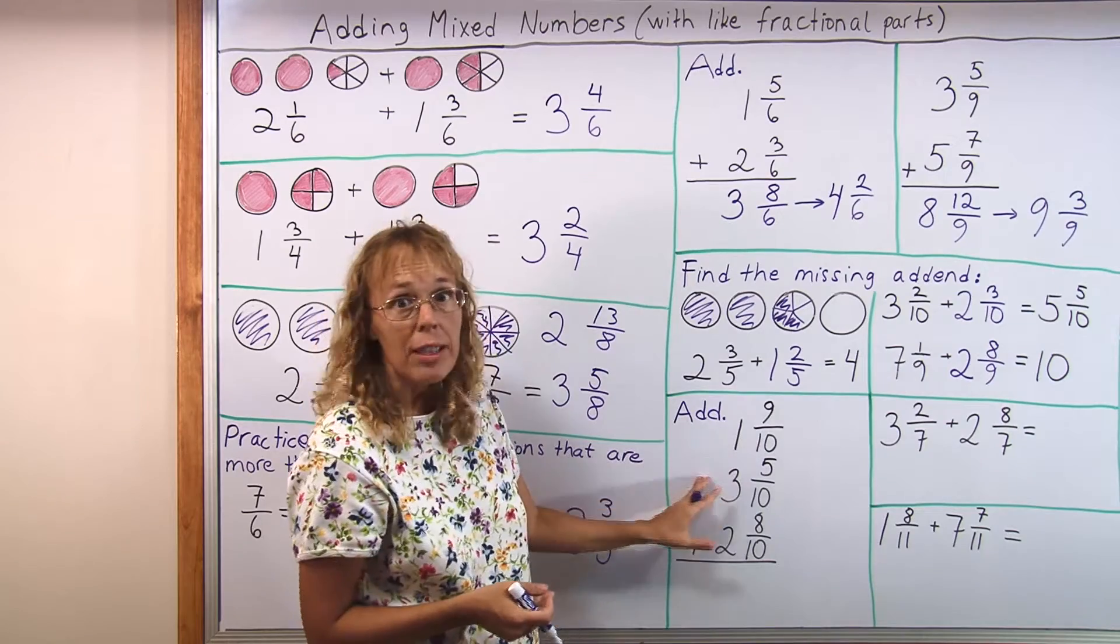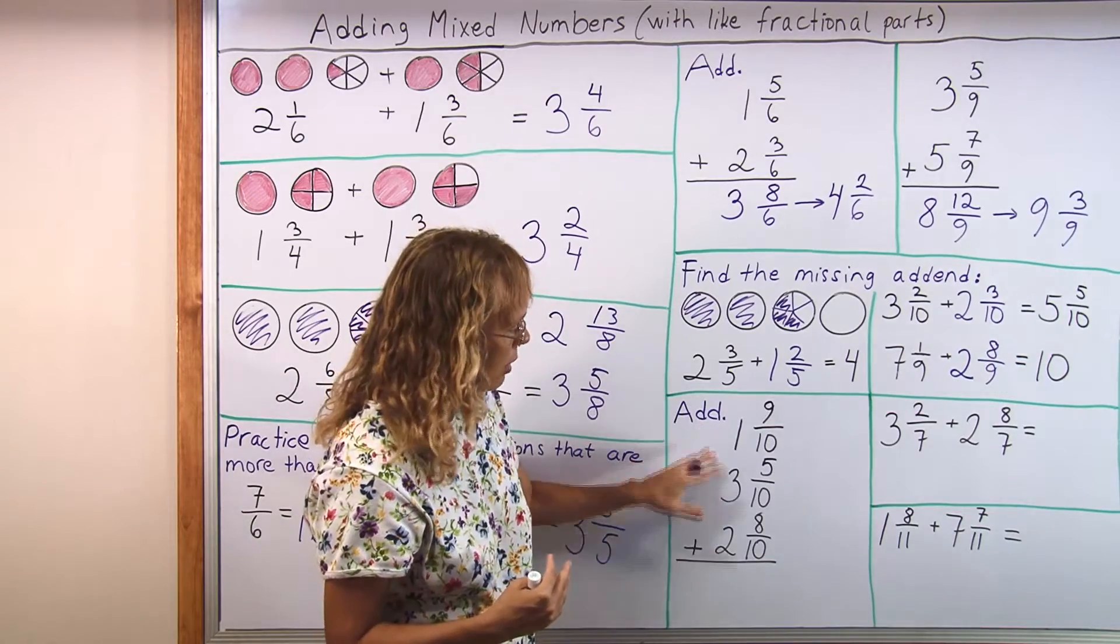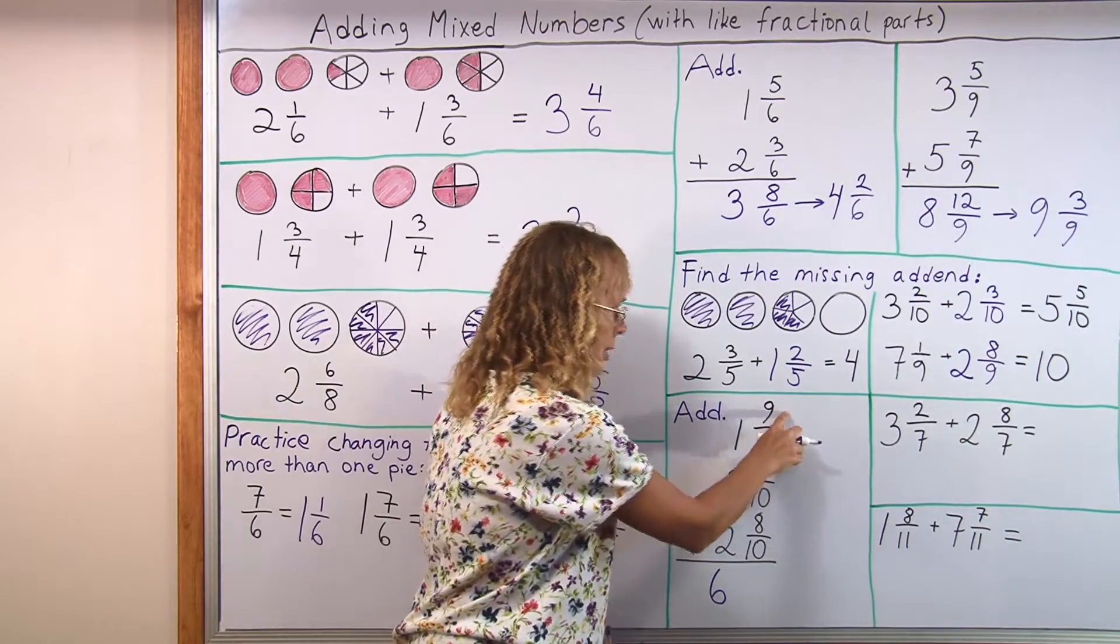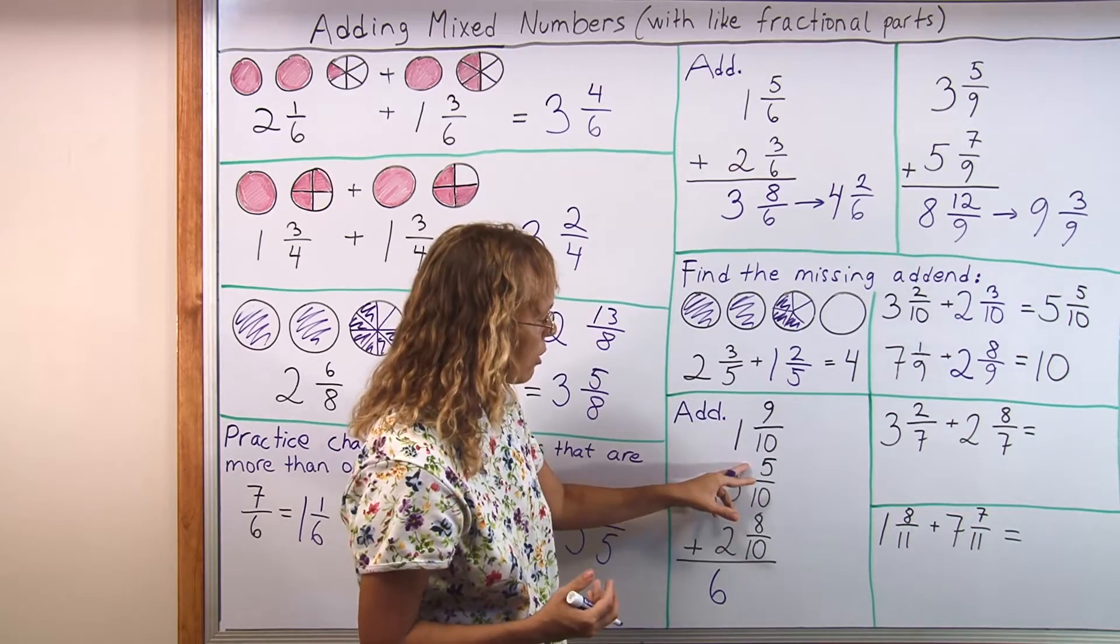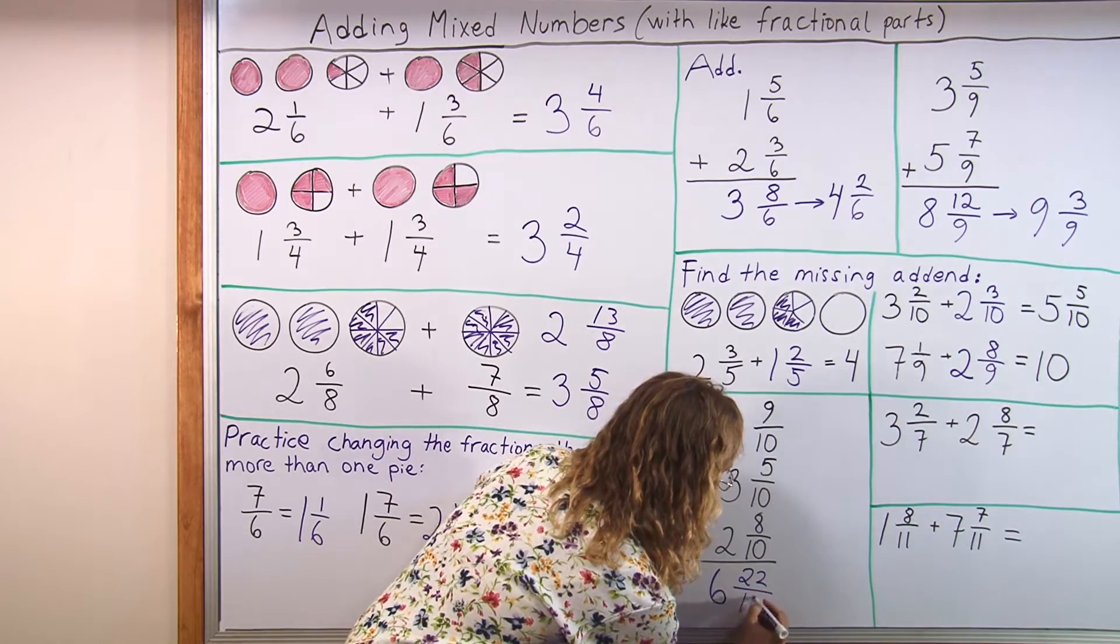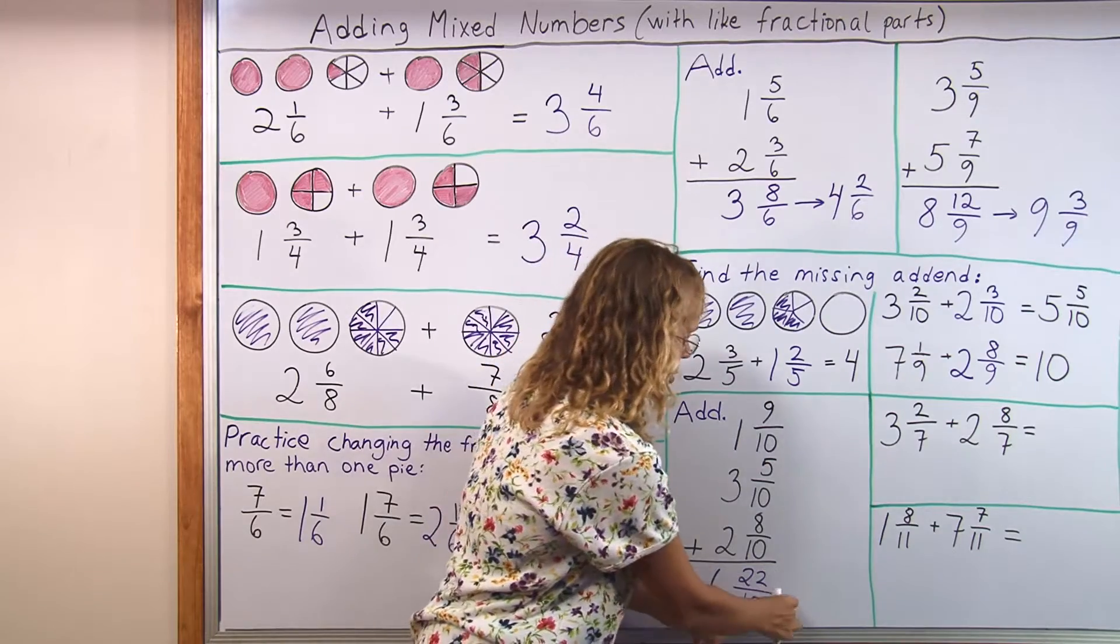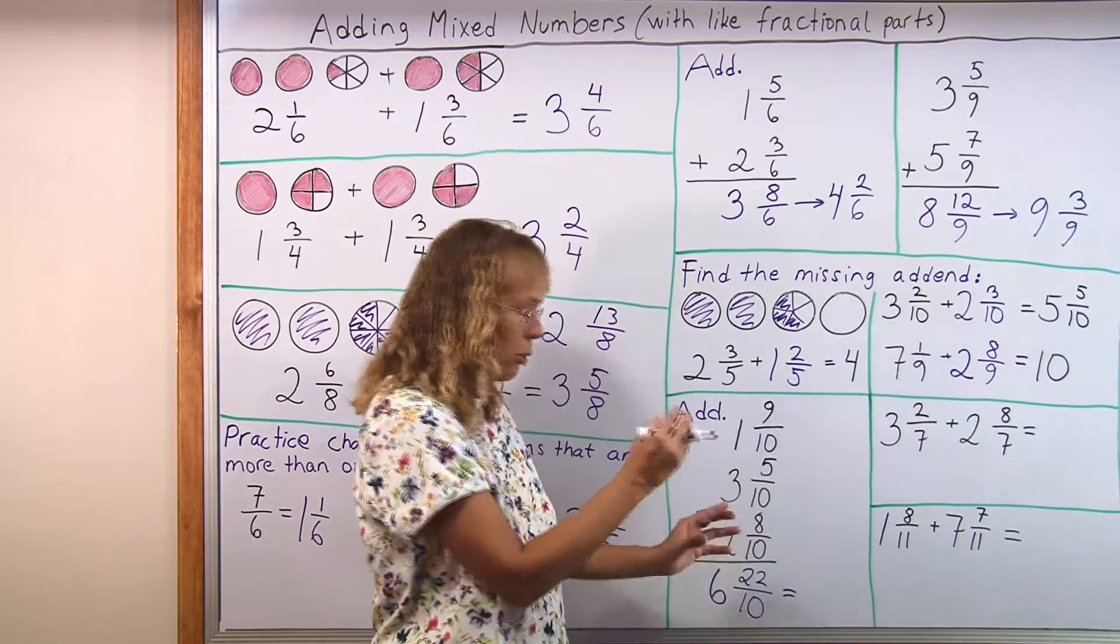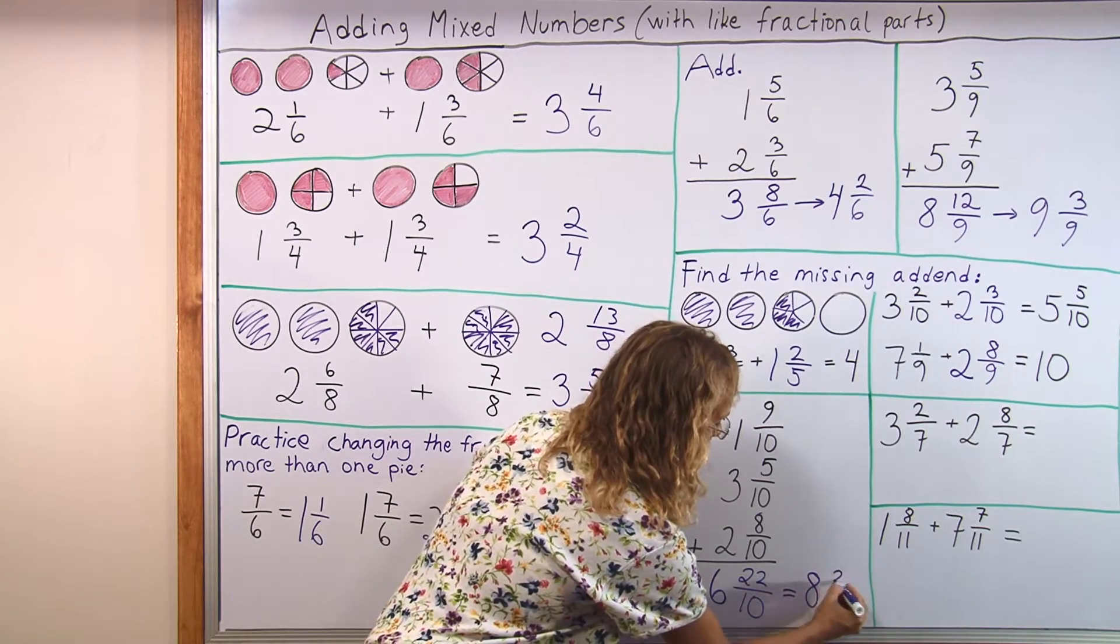And of course after working with visual models, students can then practice with abstract problems more and more. Here's an example of adding 3 mixed numbers. We can add the whole numbers first. 1, 3 and 2 makes 6. Here in the fractional parts we have 9 tenths, 5 tenths and 8 tenths. So we add all those tenths. 9 and 5 makes 14, and 8 makes 22 tenths. And the student can write it right there. Then think about the conversion or changing it. These 22 tenths actually make 2 whole pies and some left over. So 20 tenths would make 2 whole pies and we get 8 whole pies and 2 tenths left over.